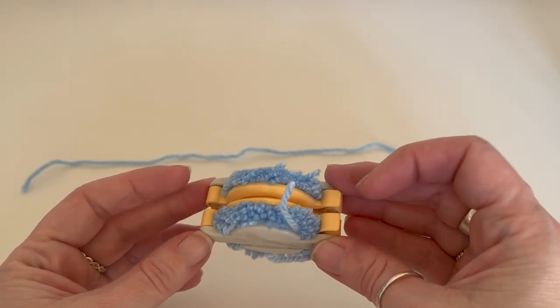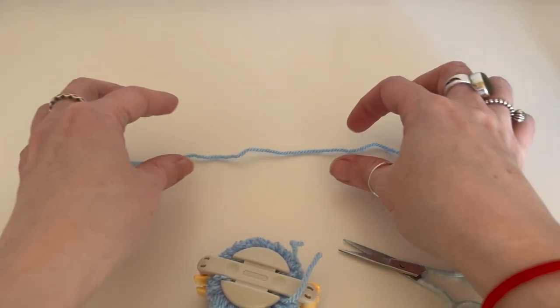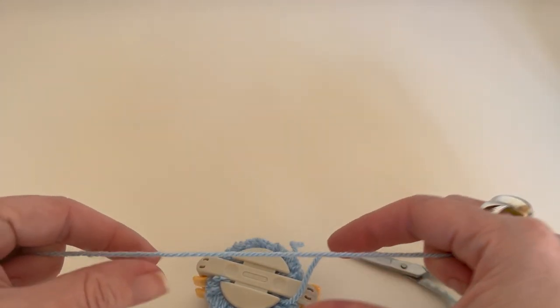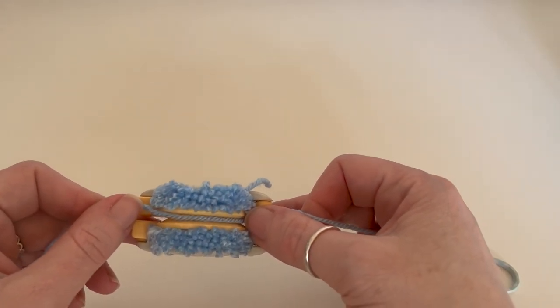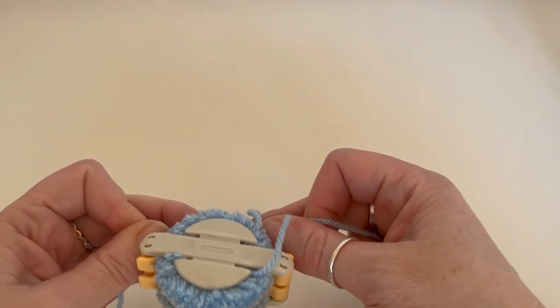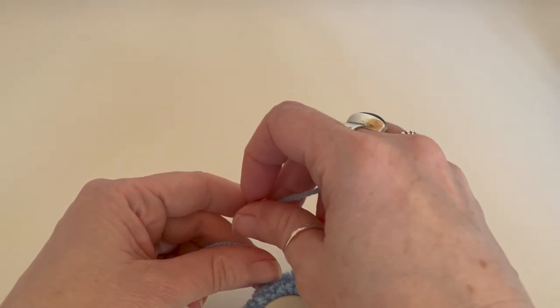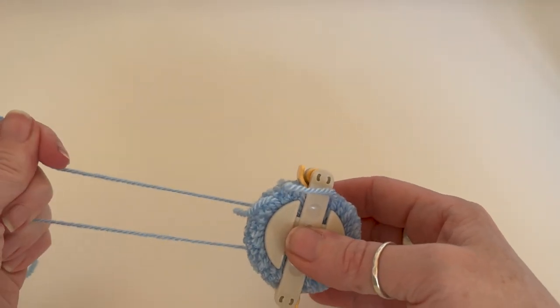So now we've got this and what you want to do is you want to grab your piece of yarn and we're just popping it through the middle. Just give it a bit of a tug to make sure it's through.